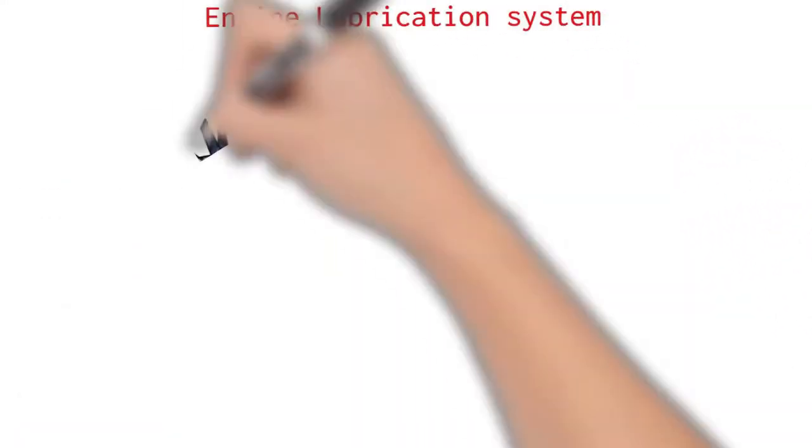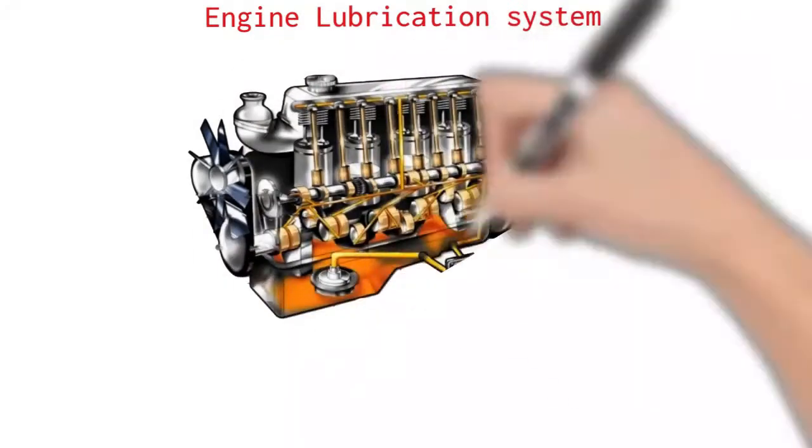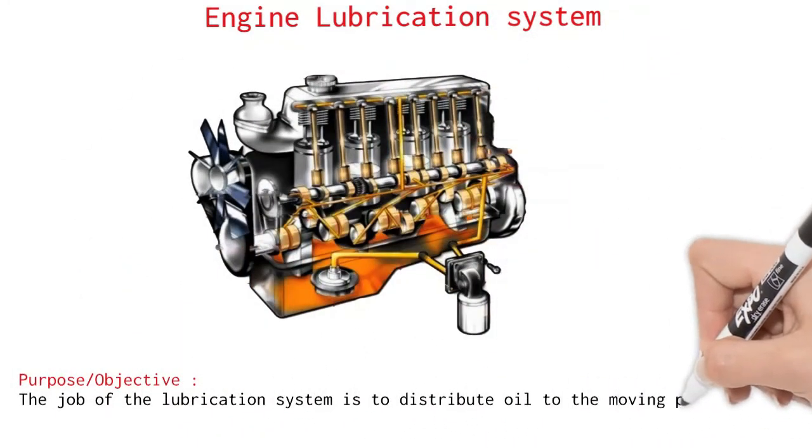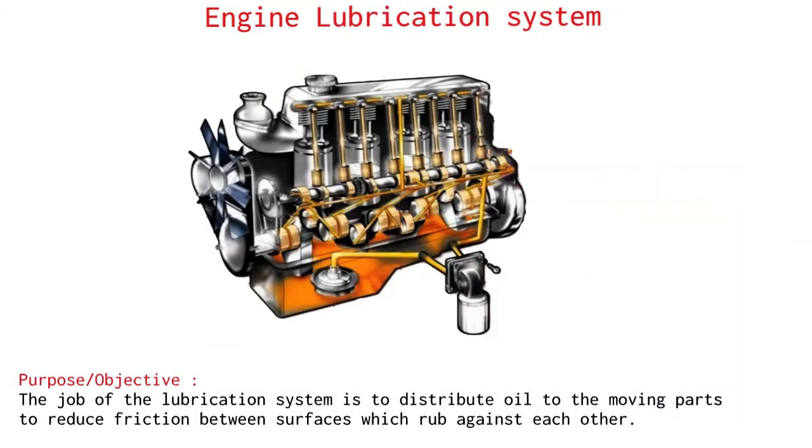Engine lubrication system. The job of the lubrication system is to distribute oil to the moving part to reduce friction between the surfaces which rub against each other.